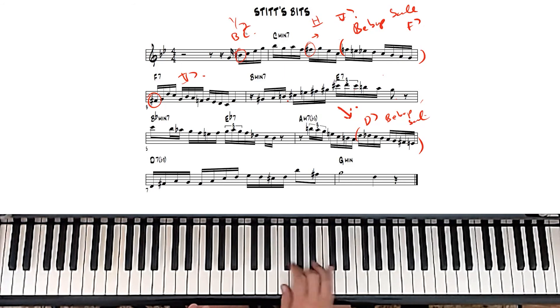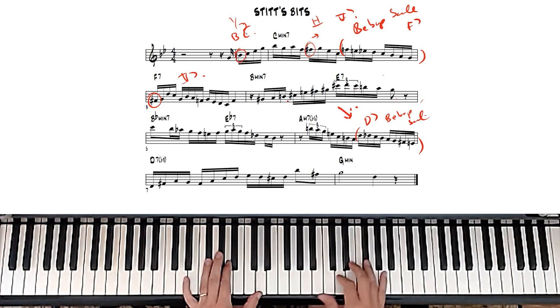So those three concepts together can really help you with your improvisational skills. One: playing two-fives wherever it makes things interesting — in this case substituting two-fives to get from C minor to A minor 7 flat 5. Two: the half step below the chord starting on the downbeat. Three: the whole concept of using bebop scales. I also added the concept of triads, which just popped into my head. This is Stitt's Bits — rewind and play the solo again to see how it all comes together.